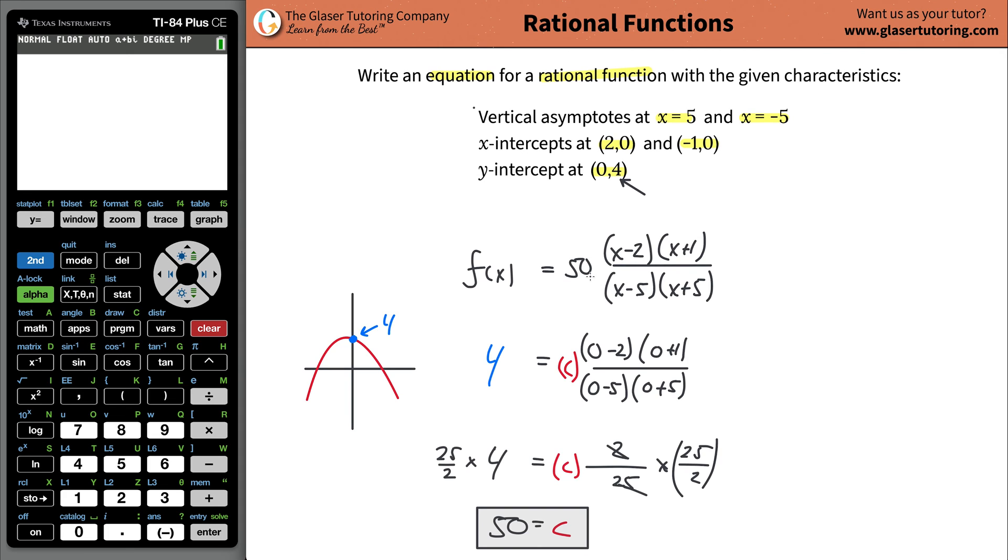So my original function up here can be written now as, get rid of the C and I'm going to write 50, and that's it. That's the answer. Now you can foil this out if you like. You might not want it in factored form. You can leave the 50 here. You can bring the 50 up to the top. I'll just bring it up to the top.